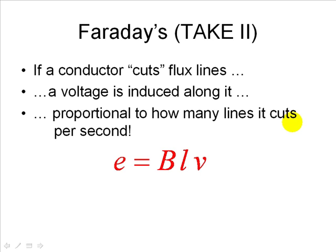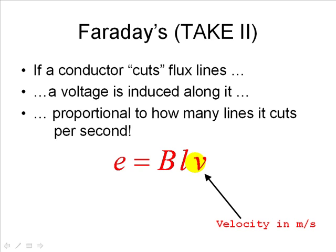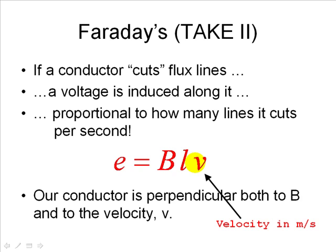Mathematically, the induced voltage is proportional to how many lines the conductor cuts per second — proportional to the density of the magnetic flux lines B, to the length of the conductor L in meters (the part that is cutting the flux), and to how fast the conductor is moving, V in meters per second. In this expression, the conductor is perpendicular to the magnetic flux lines and also to the velocity, which is the case in electric machines.